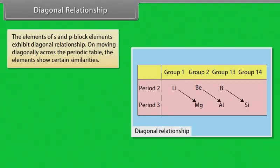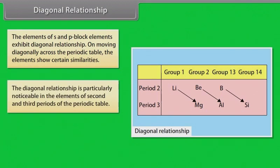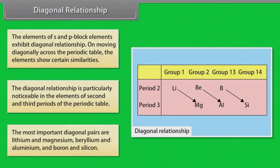Diagonal relationship. The elements of S and P-block exhibit diagonal relationship. On moving diagonally across the periodic table, the elements show certain similarities. The diagonal relationship is particularly noticeable in the elements of second and third periods of the periodic table. The most important diagonal pairs are lithium and magnesium, beryllium and aluminium, and boron and silicon.